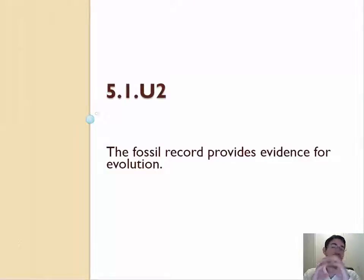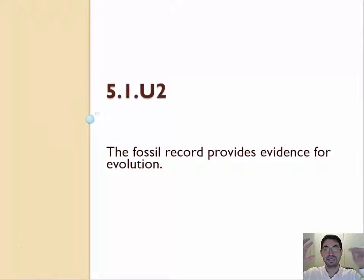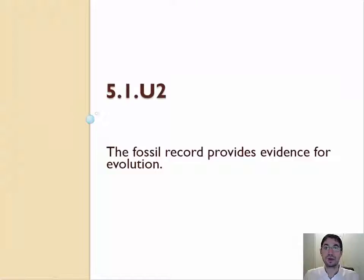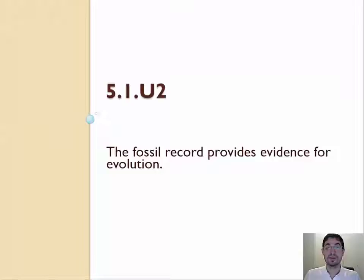There was one population of an animal that was not a human and not a chimpanzee, and that population went into two different habitats. In one habitat, the environment selected for genetic variations that led to change over time to make humans. In another habitat, it selected for different genetic variations that over time make chimpanzees. Chimpanzees are stronger, have better visual memories than humans, longer arms better for moving through trees. Humans, generally speaking, are smarter, better able to work in large groups and problem-solve, stand upright, and have less hair which helps cool us down. We have a common ancestor — we didn't evolve from each other.